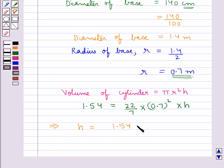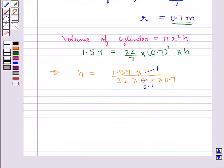This implies height h is equal to 1.54 multiplied by 7 upon 22 multiplied by 0.7 multiplied by 0.7. Now 7 into 1 times is 0.7, this is equal to 1.54 upon 22 multiplied by 0.1 multiplied by 0.7 which becomes equal to 1.54 upon 1.54.